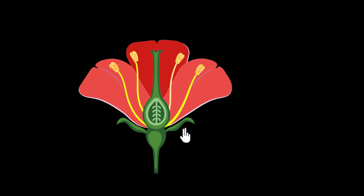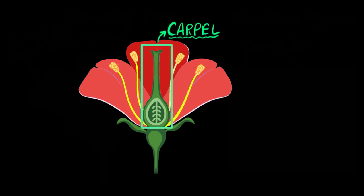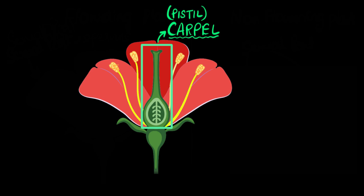The flower can be broadly divided into four parts. The middle part is called the carpel — you can also call it the pistil. Carpel and pistil are not exactly the same, but for simple flowers, we can use them interchangeably. What's important is that the carpel or pistil is the female reproductive part of the flower.